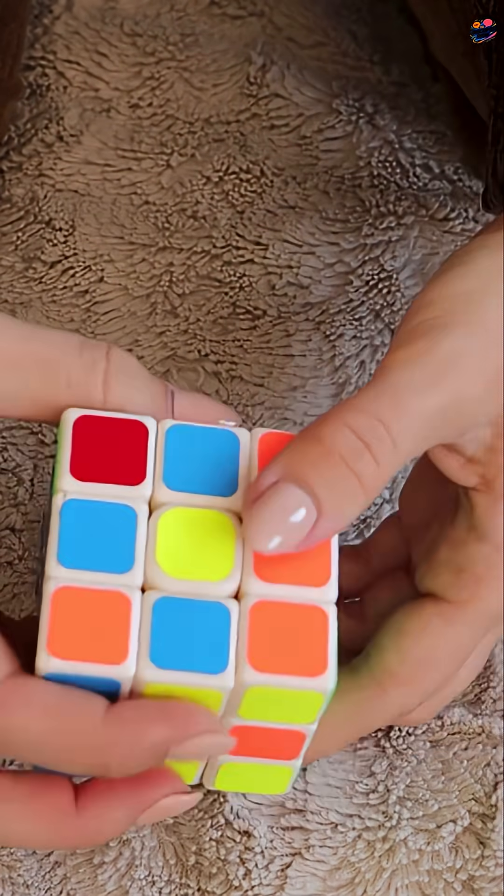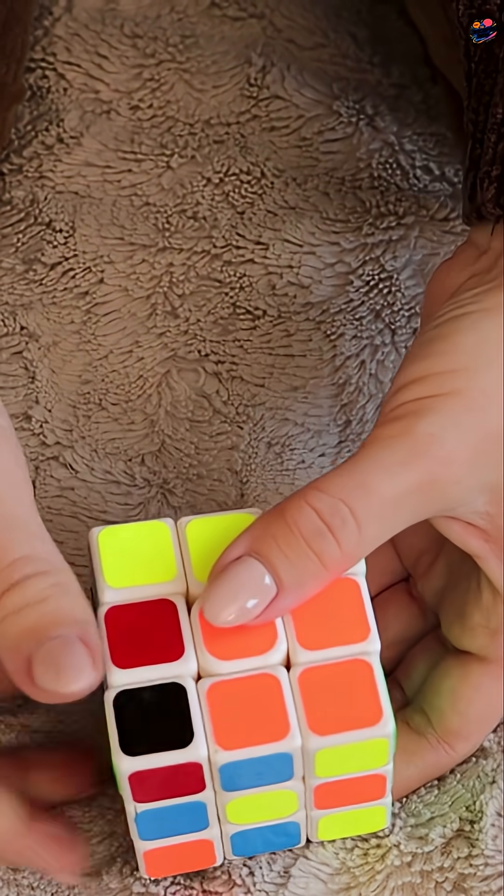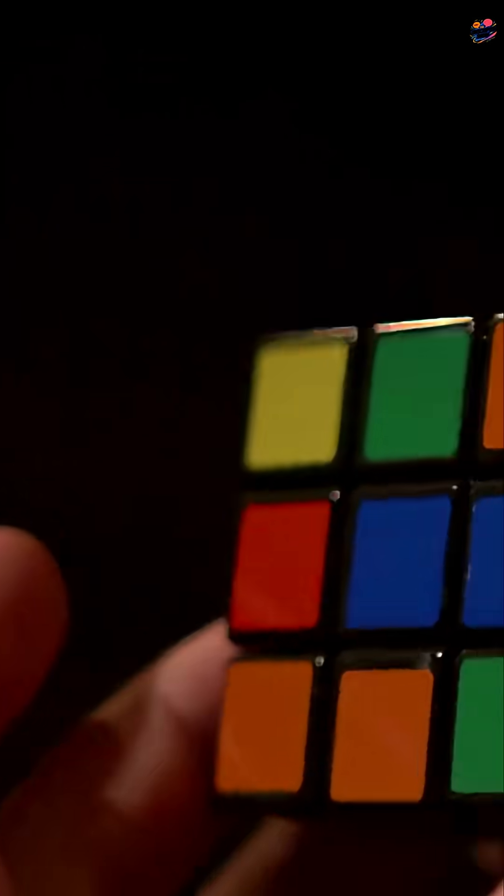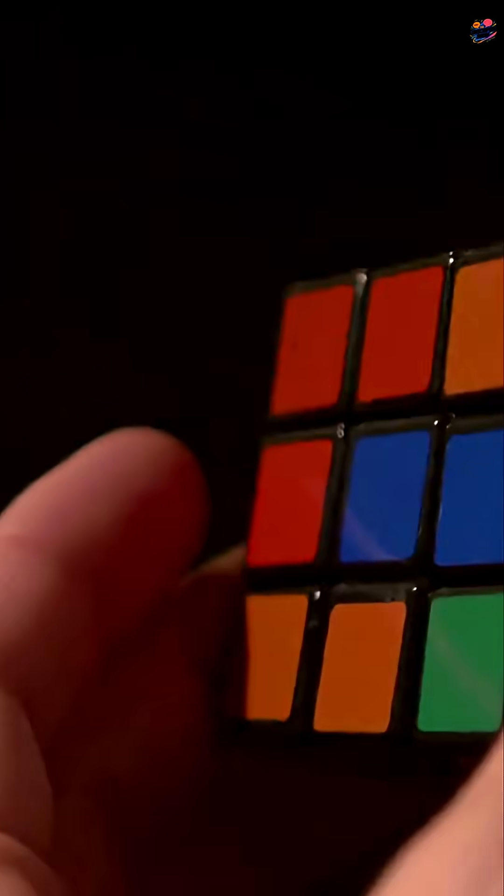In 1974, Erno Rubik, a Hungarian professor, had a vision. He aimed to teach students about 3D geometry. To do this, he created a cube made of movable blocks.